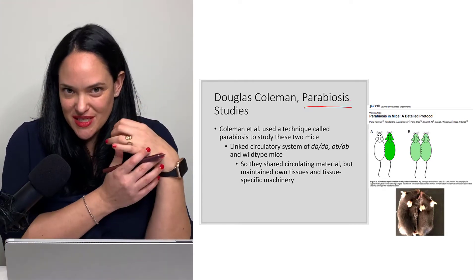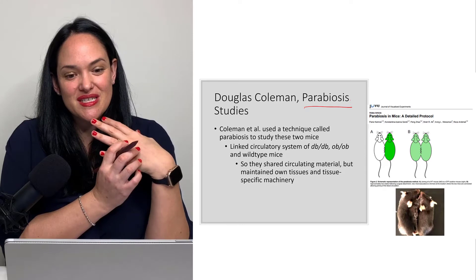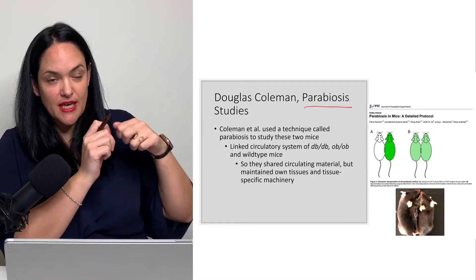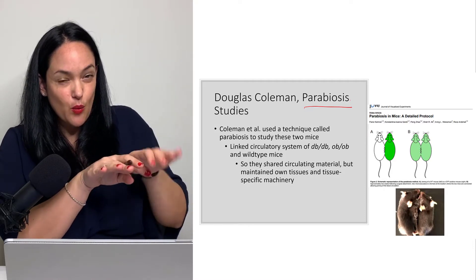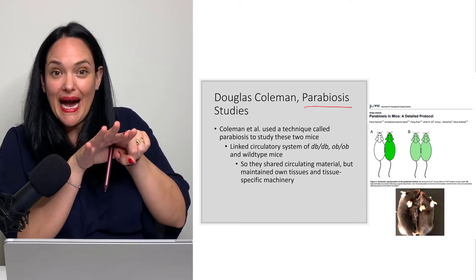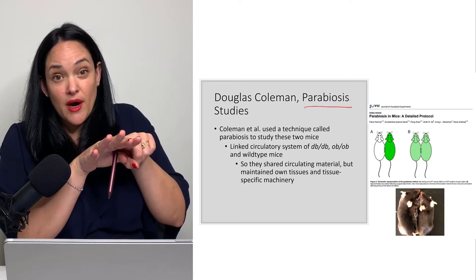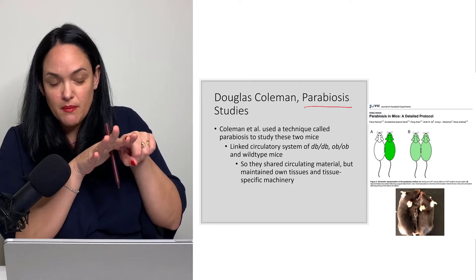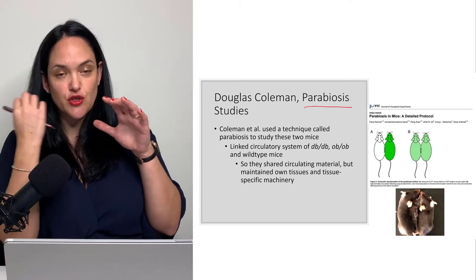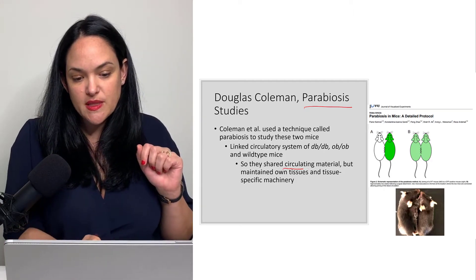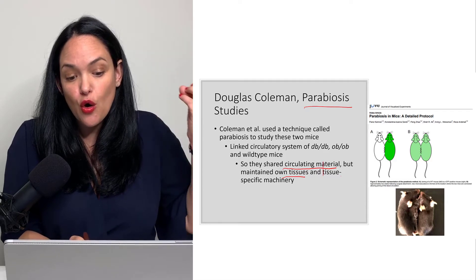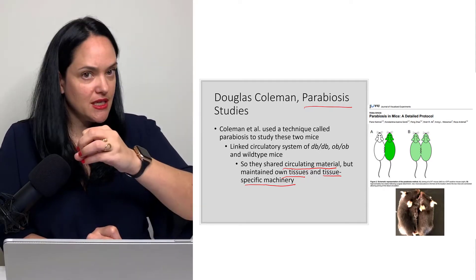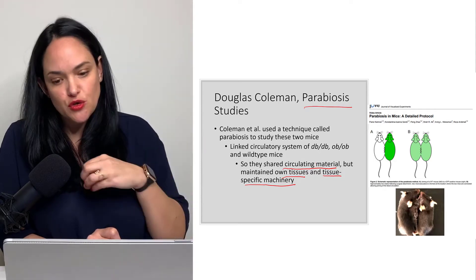Parabiosis studies — you can look up videos on this — basically involve attaching two mice together: their legs, their arms, and their abdomens. Quite quickly, a microcirculation develops between the two mice to the point where they share a circulatory system. These mice will have their own tissues and tissue-specific machinery, but what is common is that their circulatory systems are linked and factors can move between the two.